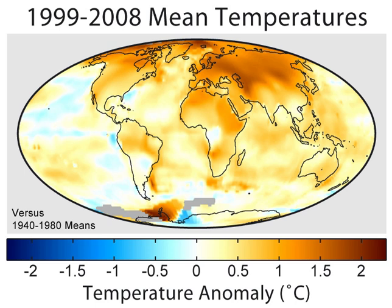Contributions to climate change, whether they cool or warm the Earth, are often described in terms of the radiative forcing or imbalance they introduce to the planet's energy budget. Anthropogenic carbon dioxide is believed to be the major component of this forcing, and the contribution of other components is often quantified in terms of ppm CO2e, or the increment or decrement in carbon dioxide concentrations which would create a radiative forcing of the same magnitude.